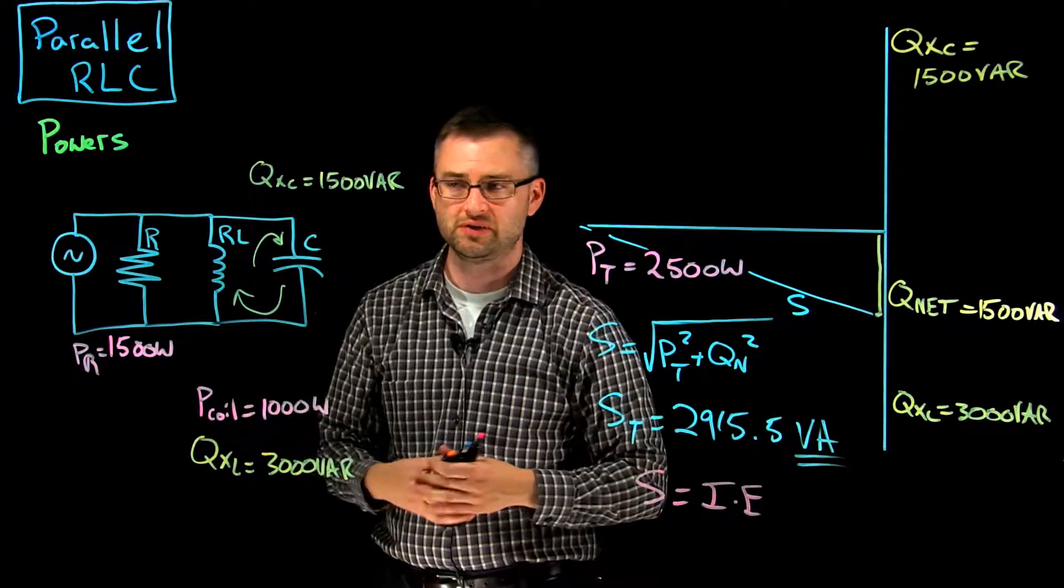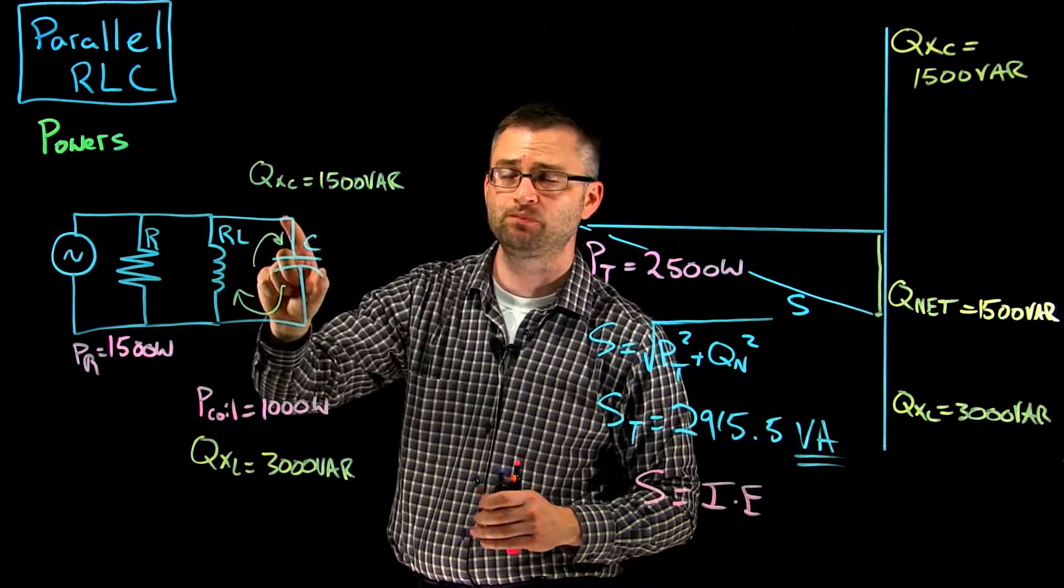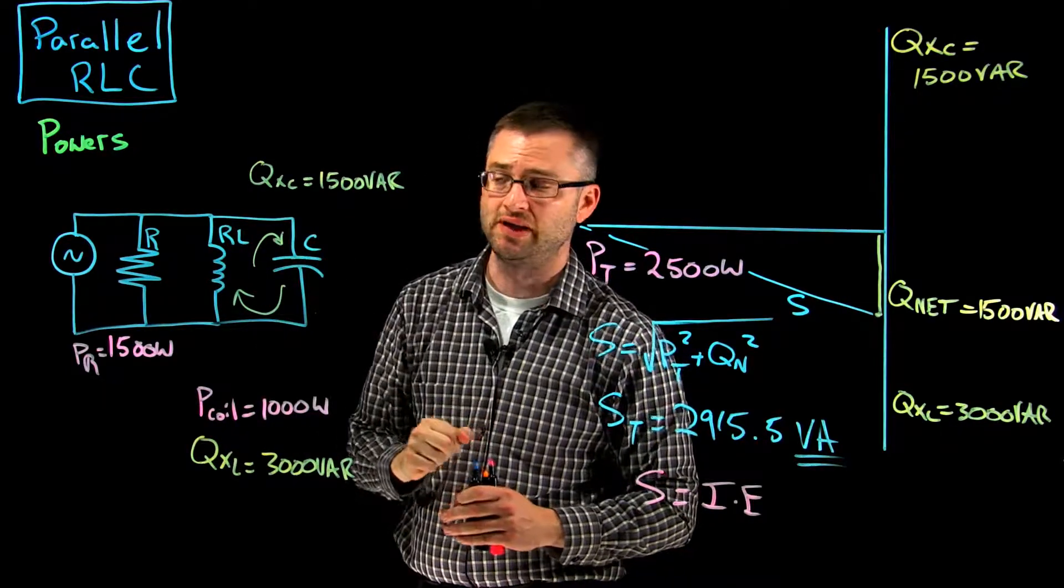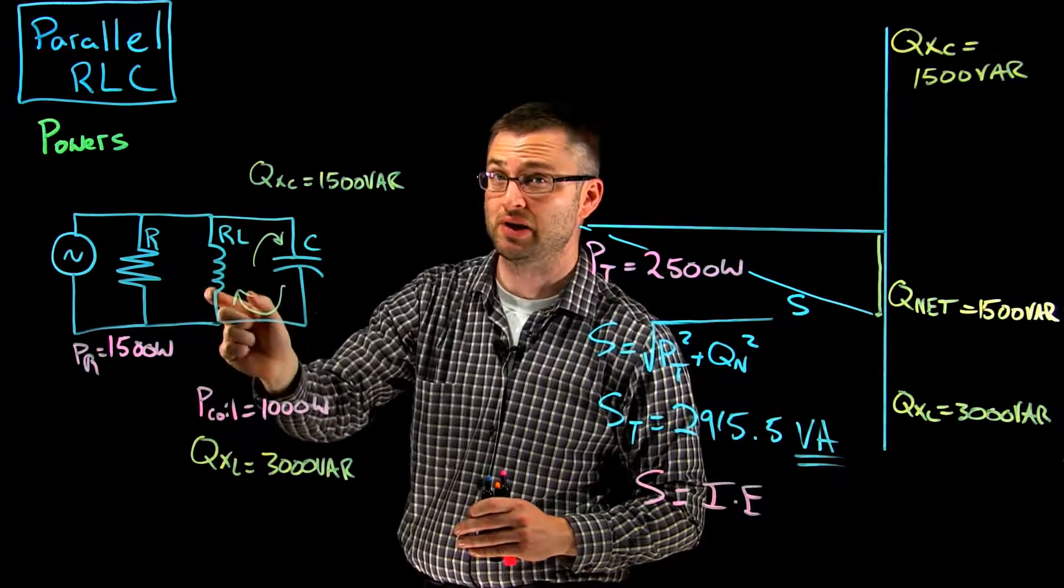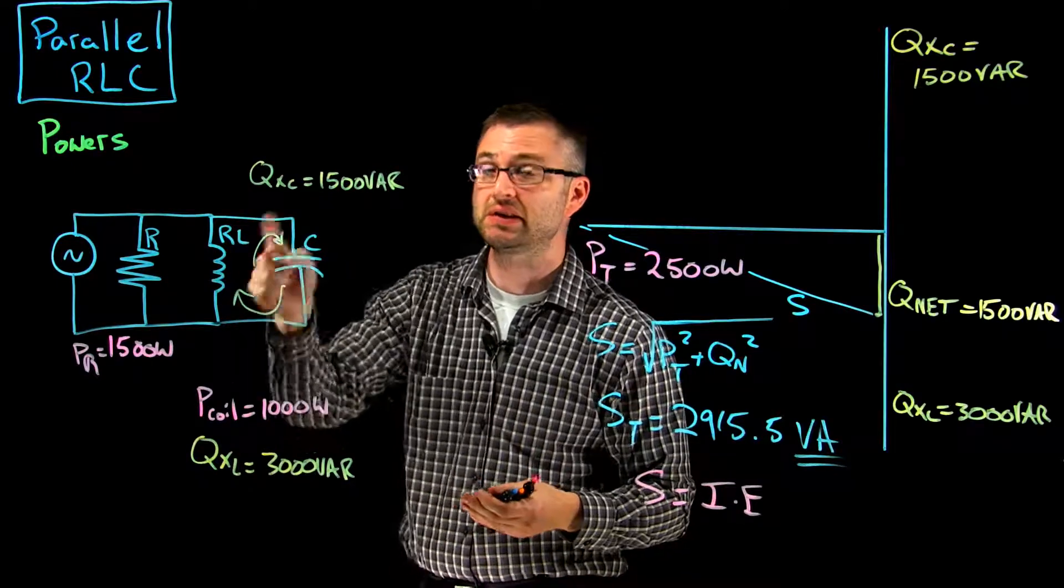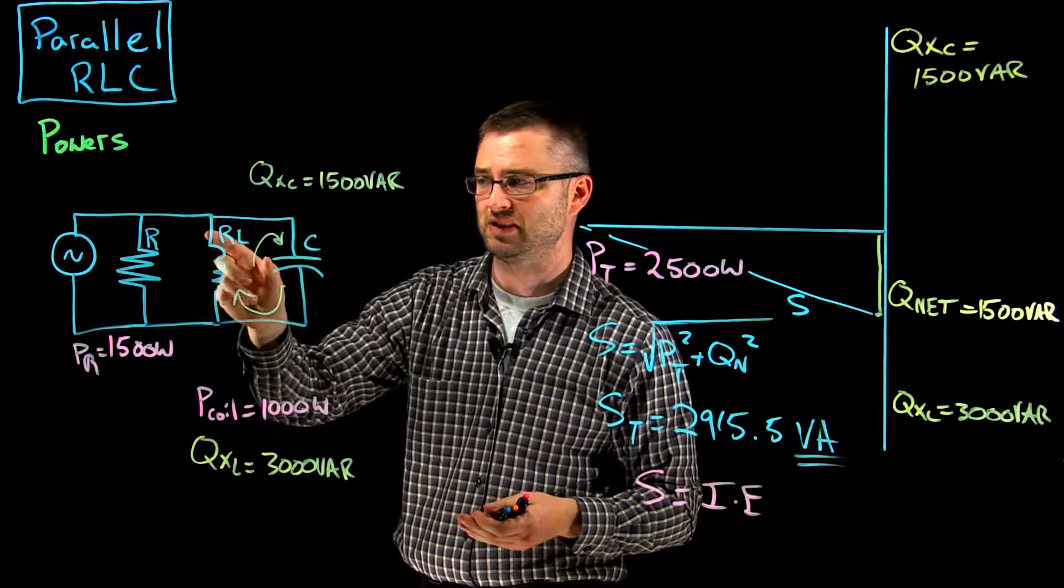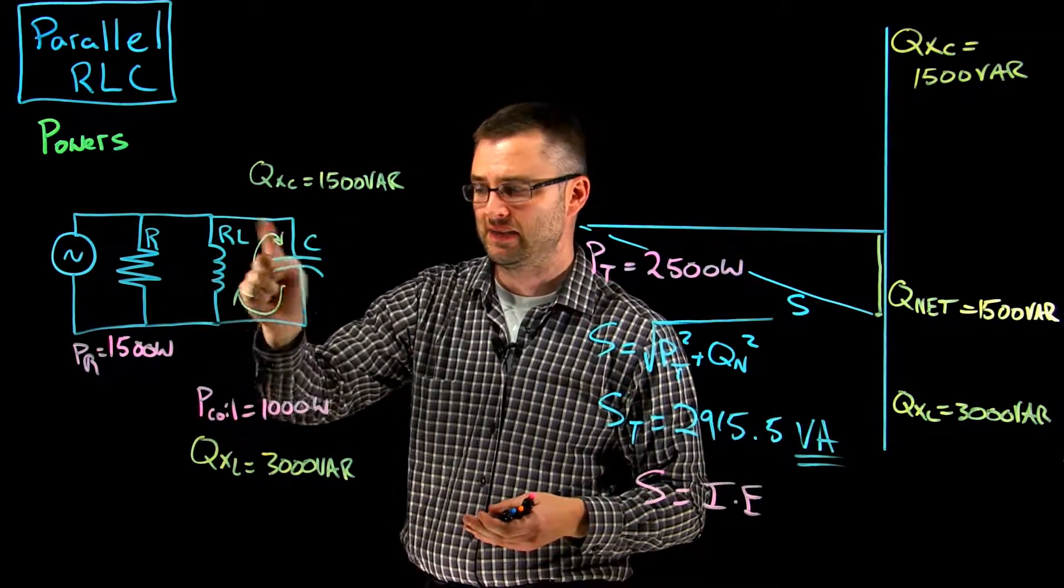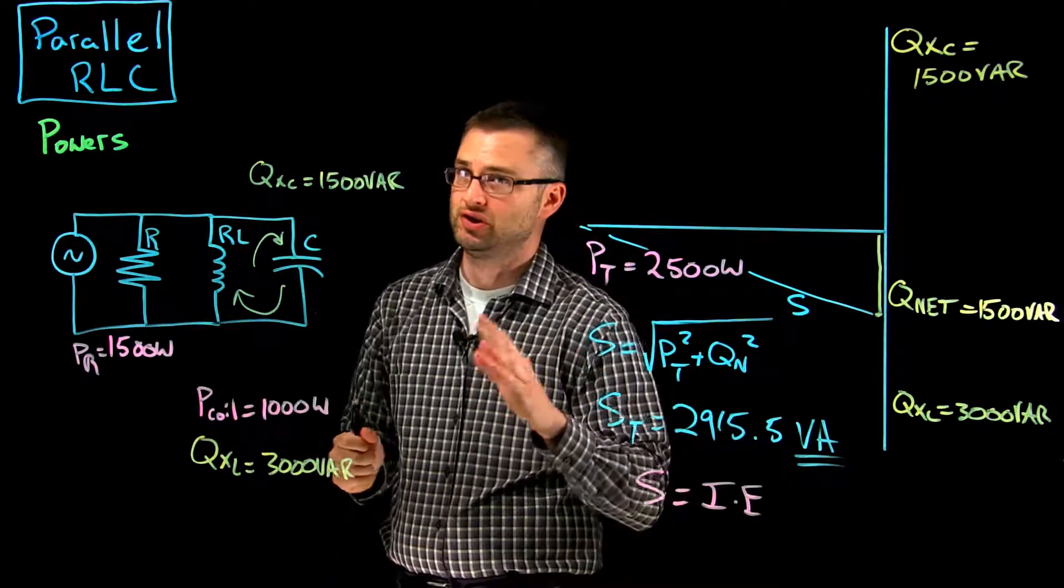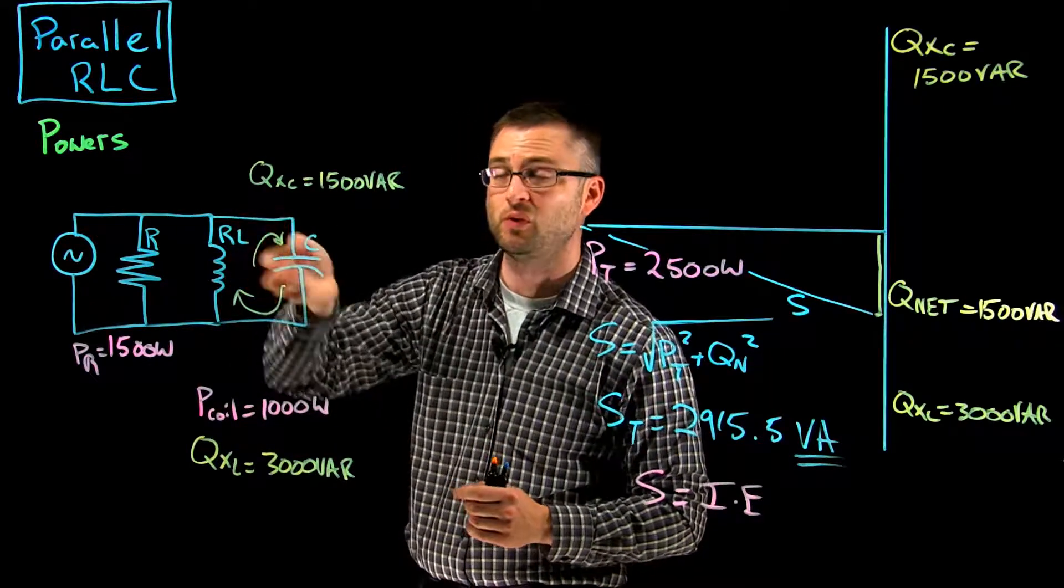But what's important to know is that even though the source isn't providing the full 1500 VArs to this cap, it's still there. There is still 1500 VArs in this branch, and here there are still 3000 VArs in this branch. They don't disappear. The burden is just taken off of the source, and now there's this little circuit inside here as well as the big circuit. So there's a little circuit, and there's 3000 VArs in here and 1500 VArs in here, and those don't disappear. It's just the source no longer has to provide power once this oscillation effect going back and forth starts to happen.